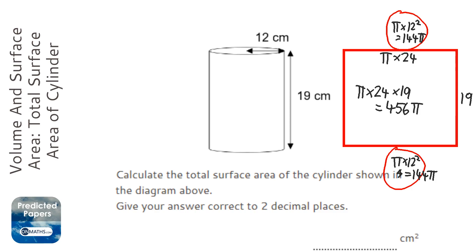And so the total surface area is 744 pi. But it wants it to two decimal places.